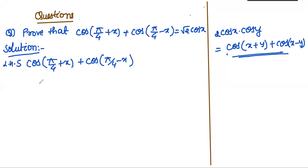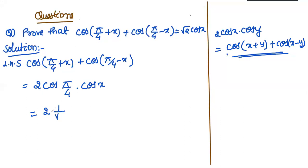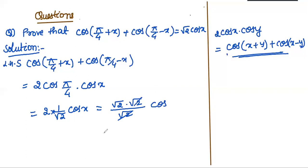Applying the identity gives 2 cos(π/4) · cos x. We know that cos(π/4) = 1/√2. So the result is 2 · (1/√2) · cos x = √2 cos x. This is the right hand side, so the proof is complete.